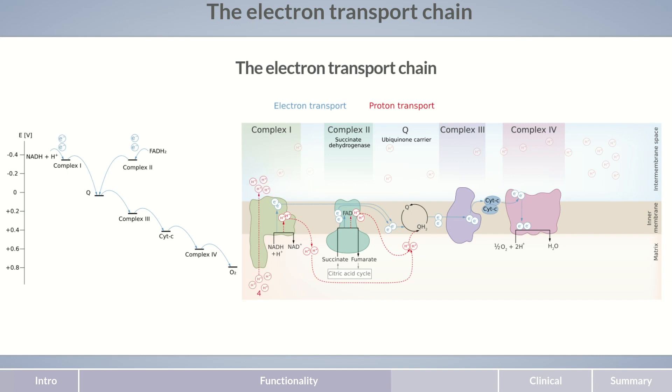Complex 1 pumps four protons into the intermembrane space, while complex 2 doesn't pump any protons. Coenzyme Q and complexes 3 and 4 each release two protons into the intermembrane space. This results in an important difference in proton numbers for the two reducing equivalents. As NADH and H+ transfers its electrons to complex 1 and FADH2 to complex 2, NADH and H+ increases the proton gradient by 10 protons and FADH2 by only 6. The higher the proton gradient, the more energy stored and ATP formed.